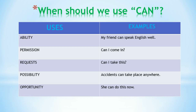The first modal we can learn is 'can.' The uses of 'can' are: ability, permission, request, possibility, and opportunity. For ability — 'My friend can speak English well.' For permission — 'Can I come in?' — here the speaker is asking permission from someone.